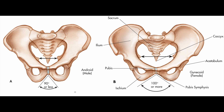Let's start with the false pelvis — this is the false pelvis on the superior side, and below we have the true pelvis. The false pelvis is shallow in the female, whereas the male's false pelvis is deeper.